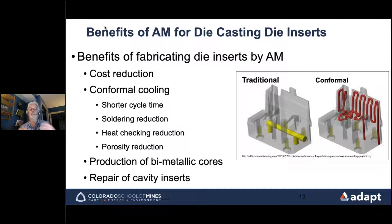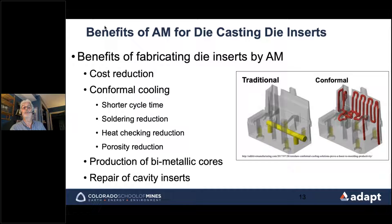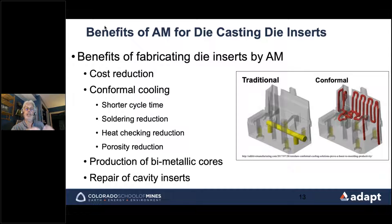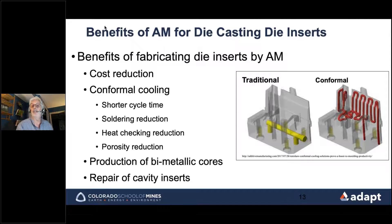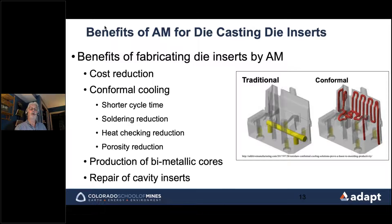Heat checking reduction is another benefit — heat checking is the cracking that normally causes a die to fail; with conformal cooling we're seeing it reduced. Porosity reduction is also significant: many die castings are used in leak-type applications, and with conformal cooling we're seeing fewer leak failures, reducing scrap rates and increasing productivity and revenue. Conformal cooling is having a very large impact across all of these areas.